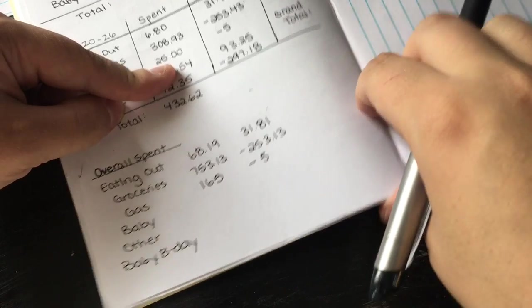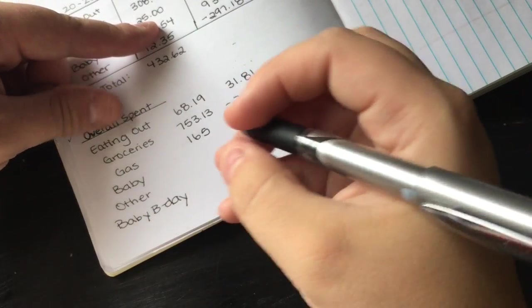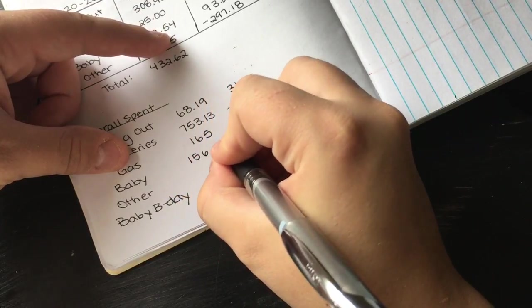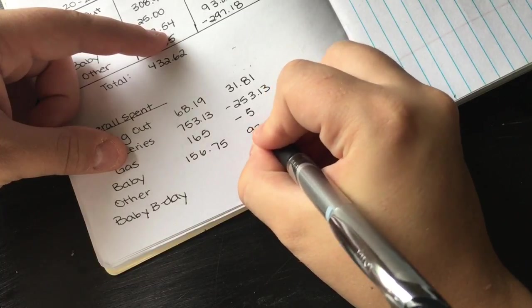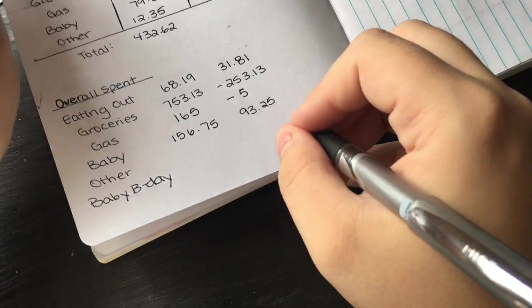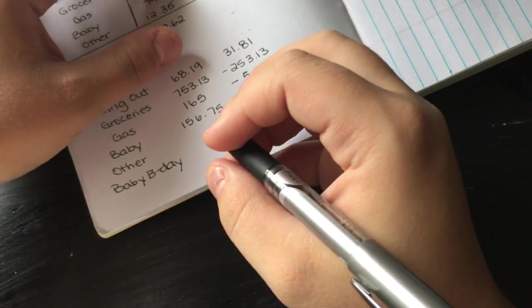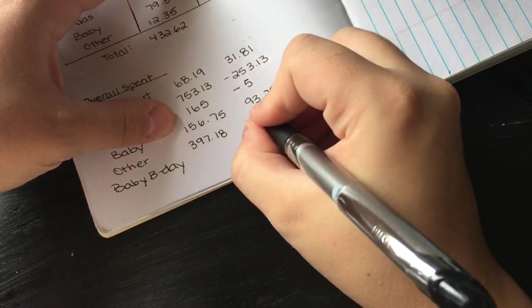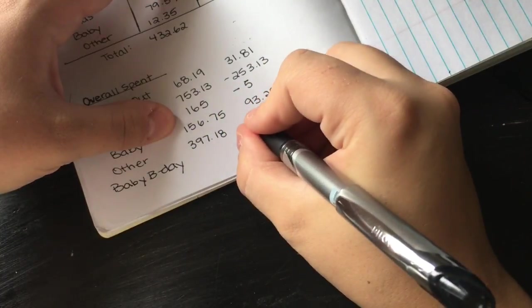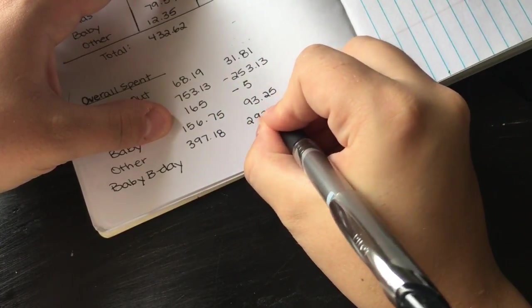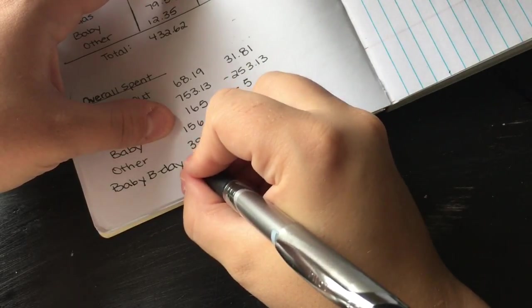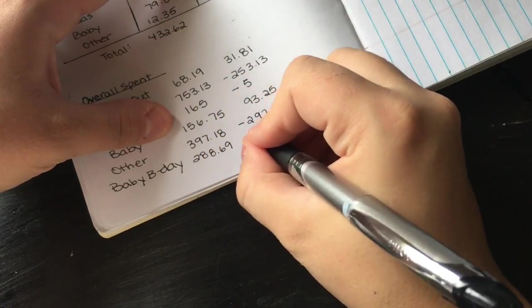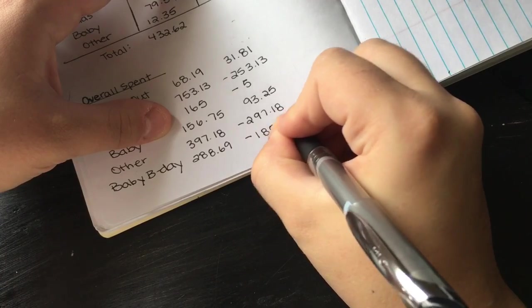These totals are up here, but I just want to explain what we spent. Baby we spent $156.75, so we were under budget by $93.25 because that's a $250 budget. Other category we spent $397.18 and we had a $100 budget, so that means we're over by $297.18. My son's birthday we spent $288.69, so we were over by $188.69 because we had a $100 budget.